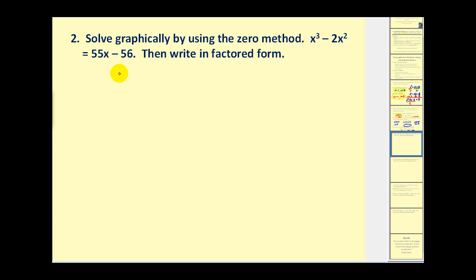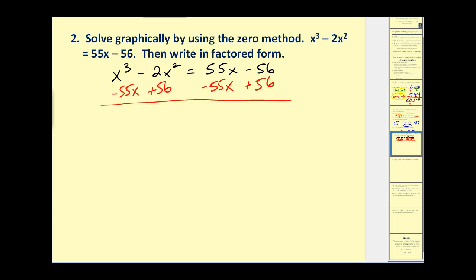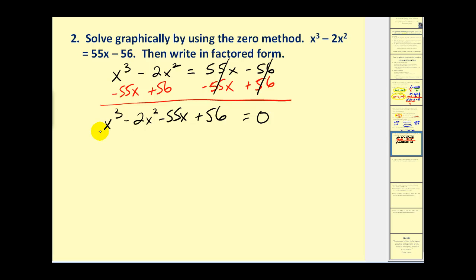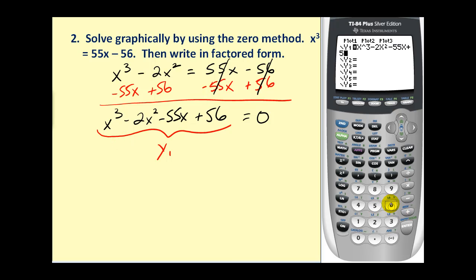Now we want to solve x cubed minus two x squared equals 55x minus 56 using the zero method. We subtract 55x on both sides and add 56, giving us zero on the right. The left side becomes x cubed minus two x squared minus 55x plus 56. Because this is a degree three polynomial equation, we can expect at most three solutions. Let's graph this in y one and look for three x-intercepts.